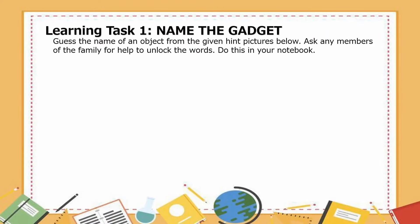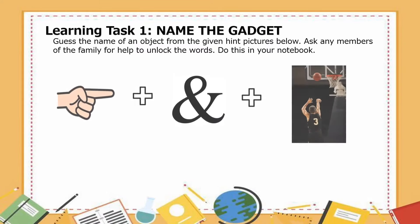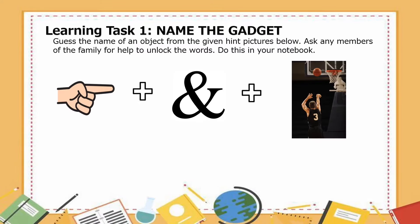Now let us try to answer Learning Task 1: Name the Gadget. Guess the name of an object from the given hint pictures. You may ask any members of the family for help to unblock the words, and you may do this on your notebook. Let's have the first picture — you have 10 seconds to answer.